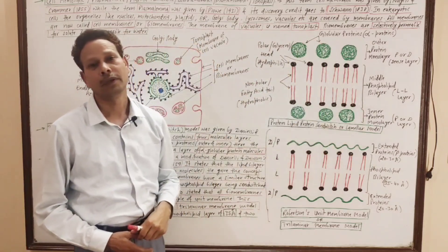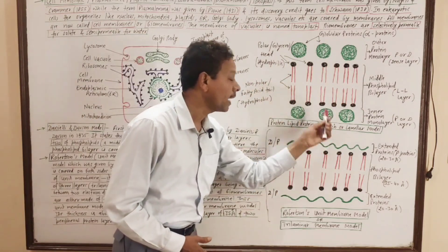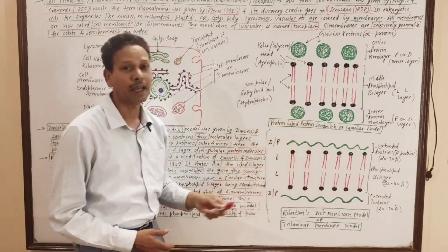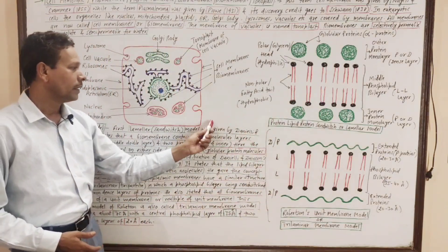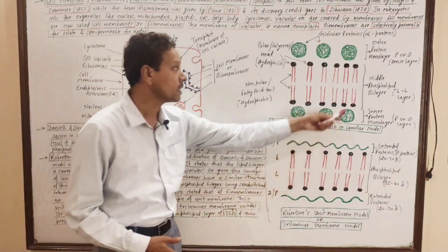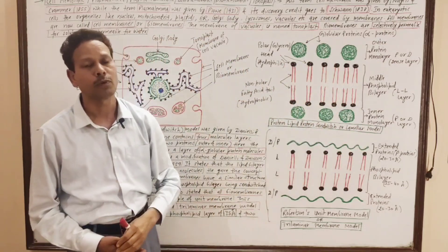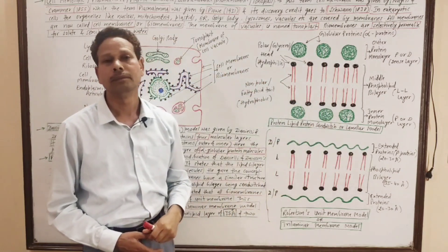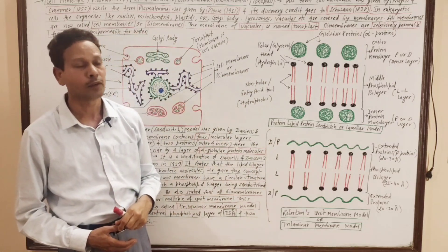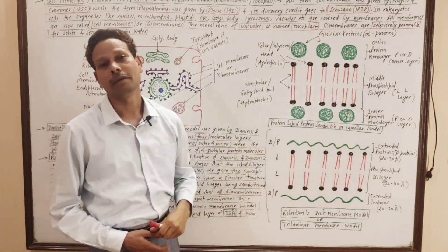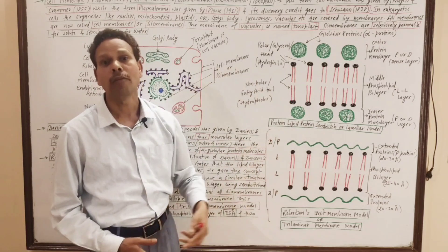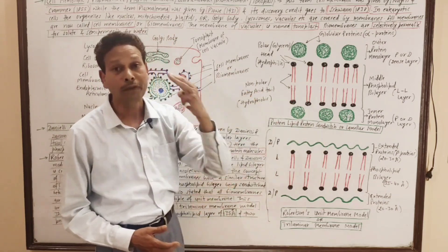This is the model of a cell membrane. This model is the sandwich model, also called the lamellar model. The first lamellar or sandwich model was given by Danielli and Davson in 1935. According to this model, each cell membrane or biomembrane is made up of four layers.